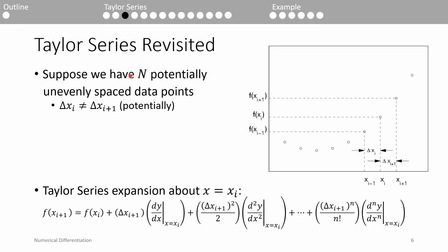Let's say we have n data points. The point of interest is xi and its y-value is f. The point in front of xi is denoted xi plus 1 and its corresponding y-value is f. The point behind xi is denoted xi minus 1 and its corresponding y-value is f. The distance between xi and xi plus 1 is denoted delta xi plus 1, and the distance between xi and xi minus 1 is denoted delta xi. For all n points, the spacing may not be uniform — delta xi may not necessarily equal delta xi plus 1.